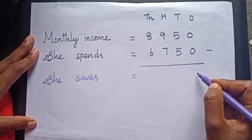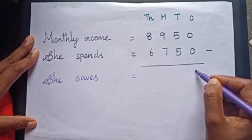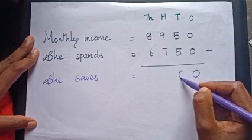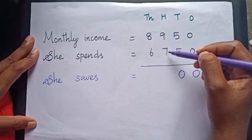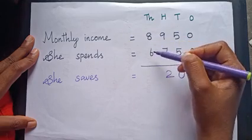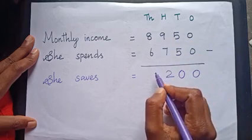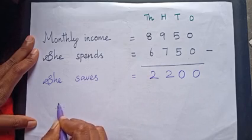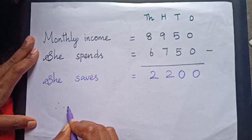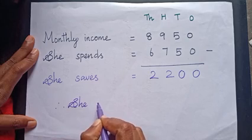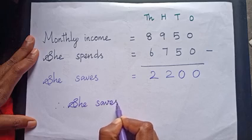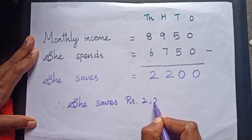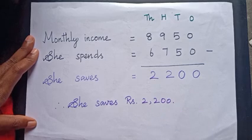Let's subtract. 0 minus 0 equals? Yes, very good, 0. 5 minus 5 equals? Yes, 0. 9 minus 7 equals? Yes, 2. 8 minus 6 equals? Yes, 2. Therefore, she saves rupees 2,200.